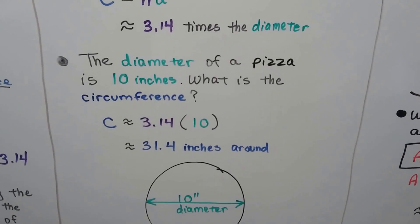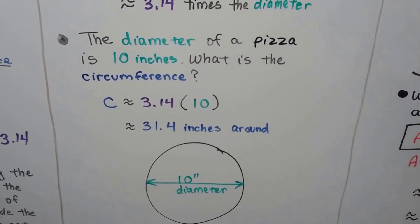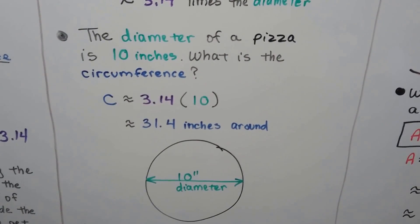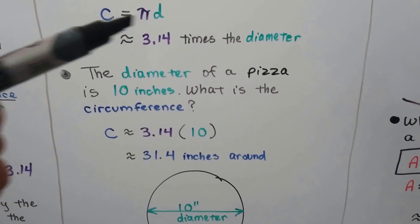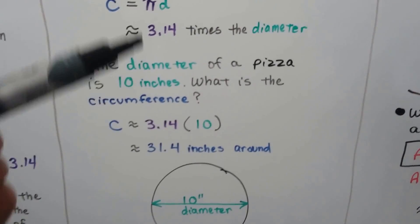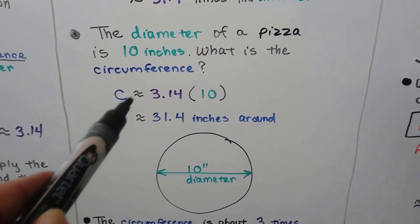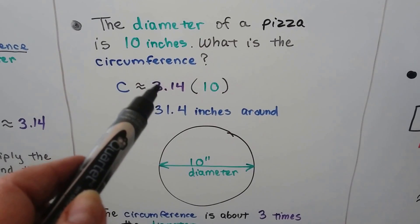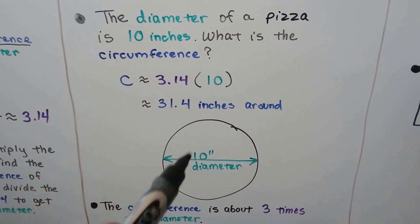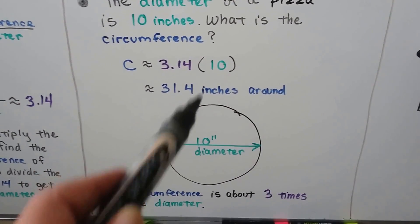And the diameter of a pizza is 10 inches. What is the circumference? So we're going to use this formula and we're going to plug in the 10 inches for diameter. So we've got approximately, because remember we're not using all the digits for pi, 3.14 times 10, the diameter. We get 31.4 inches around.